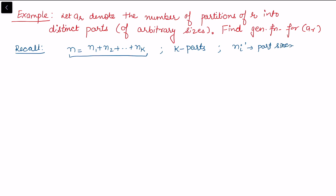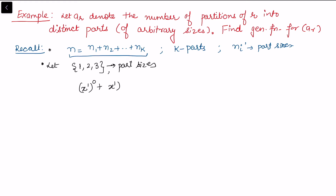In the last video, if we take fixed part sizes — say 1, 2, 3 — and want to write the partition corresponding to these part sizes where they can appear any number of times, the generating function is: for size 1, we write x to the power 1 appearing zero times, x to the power 1 appearing one time, and so on.